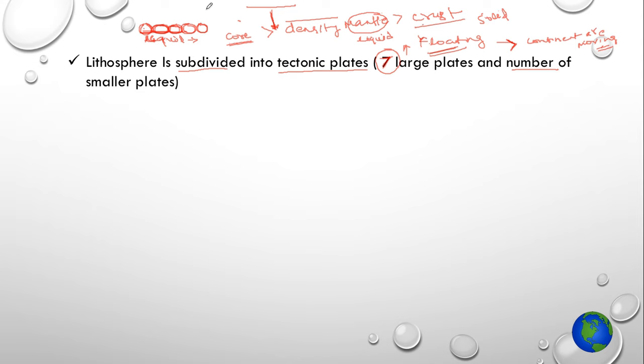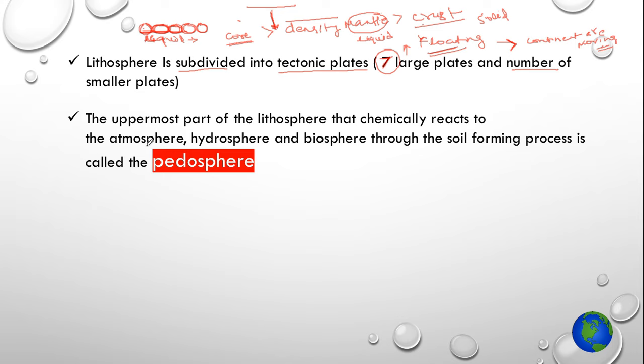The upper part of lithosphere chemically reacts with the atmosphere, hydrosphere, and biosphere through soil forming processes. These soil forming processes include weathering, erosion, and soil liquefaction. The upper portion of the lithosphere constitutes soil, and this portion where soil forming processes are taking place is called the pedosphere.